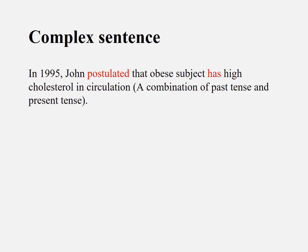When you construct a complex sentence, you can use a mix of past and present tenses. For example, 'in 1995, John postulated that obesity subjects have high cholesterol in circulation.' Because 1995 is a long time ago, 'postulated' uses the past tense. But 'have high cholesterol' talks about a fact, which is not that specific — therefore you use the present tense.